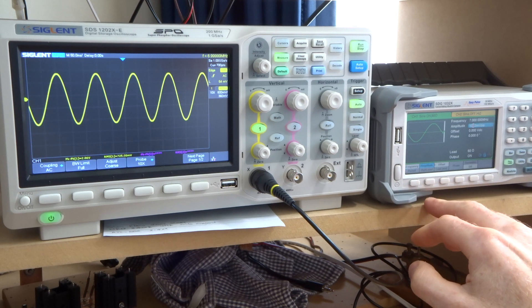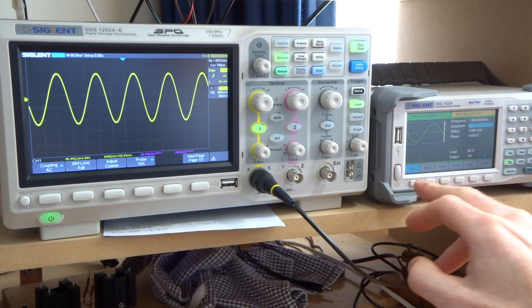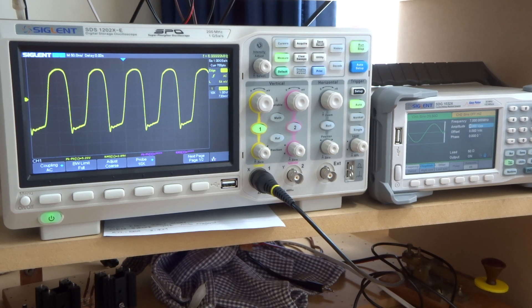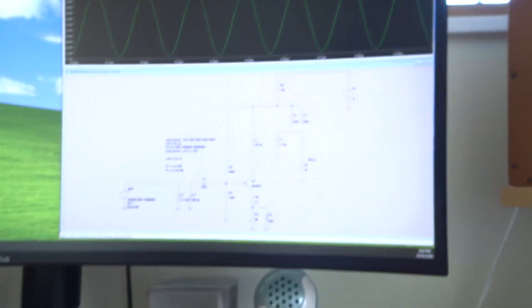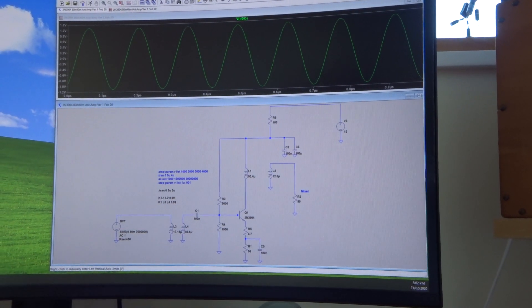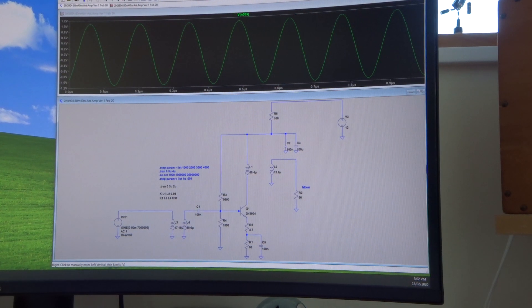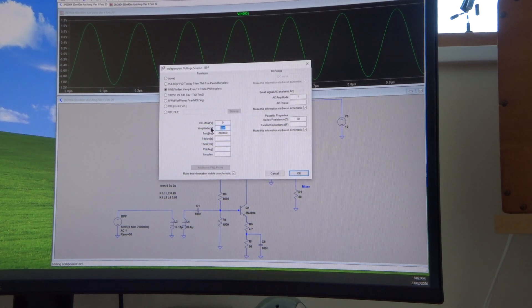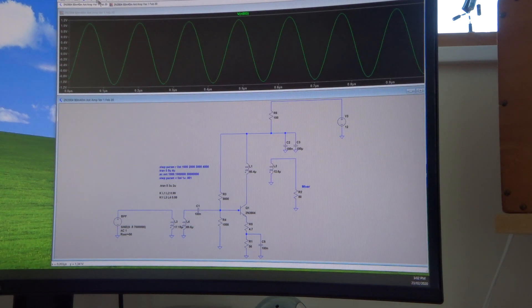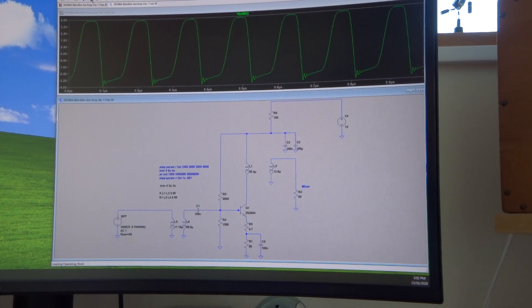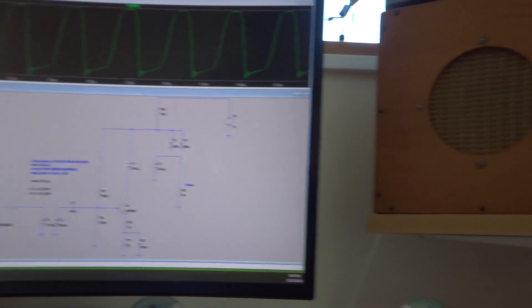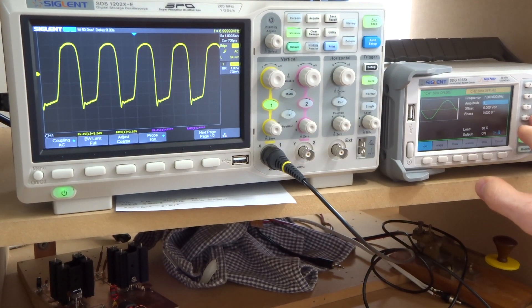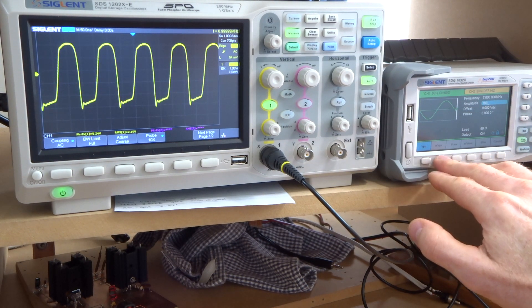If I crank up that amplitude to 1 volt peak to peak, then we're certainly now getting into distortion area - not expecting to see 1 volt peak to peak on the antenna, well not normally. And if I do the same thing up here in the simulation, 1 volt is 0.5 volts peak, and re-simulating that, we get exactly the same. So it's good to see that the simulation is certainly aligning nicely with what we're seeing in the actual testing.